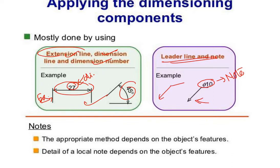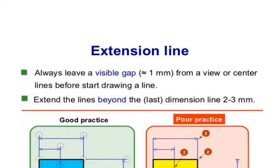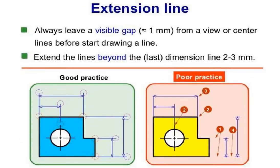This is the leader line and node — this is the number and value of the node. This is the leader line. This is the extension line, this is the visible gap, and this is the object outline. This is the extension line.